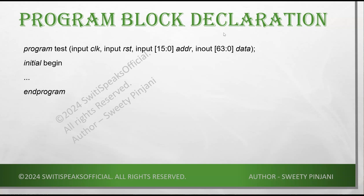Now let us see how we declare a Program Block. We use the keyword 'program' to start and 'endprogram' to end. In this example, the name of the Program Block is 'test'. Inside it, I am taking inputs: clock, reset, address, and inout data. Then I have an initial begin block. Remember — inside a Program Block we can have initial and final, but not always. Whatever code you need can go inside this skeleton.